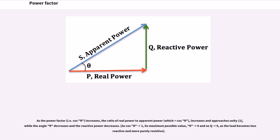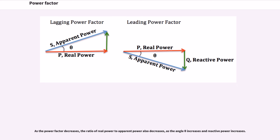As the load becomes less reactive and more purely resistive, as the power factor decreases, the ratio of real power to apparent power also decreases, as the angle theta increases and reactive power increases.